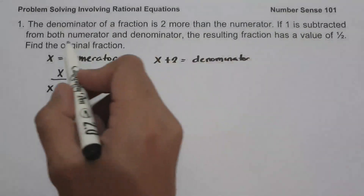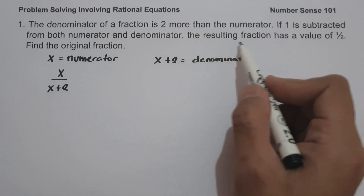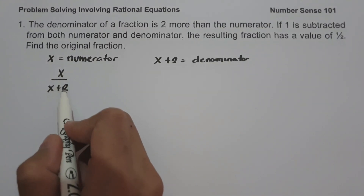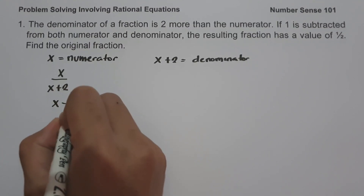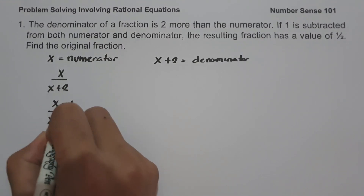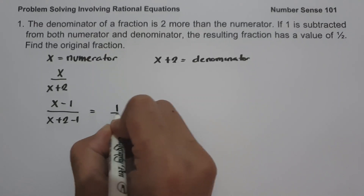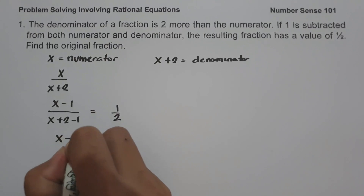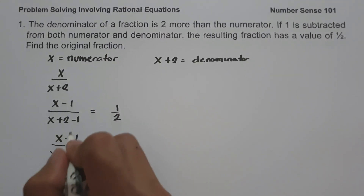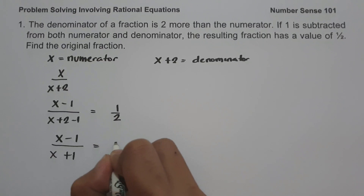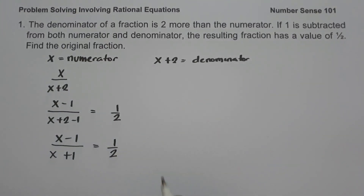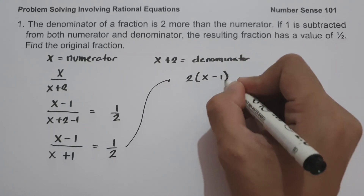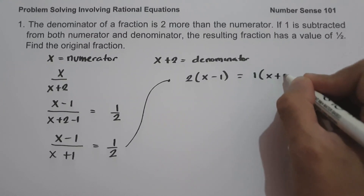If one is subtracted from both numerator and denominator, the resulting fraction has a value of one-half. So let us subtract one from the numerator and the denominator: x minus one all over x plus two minus one equals one-half. Simplifying, we have x minus one all over x plus one equals one-half. Let us cross multiply: two multiplied by x minus one equals one times x plus one.